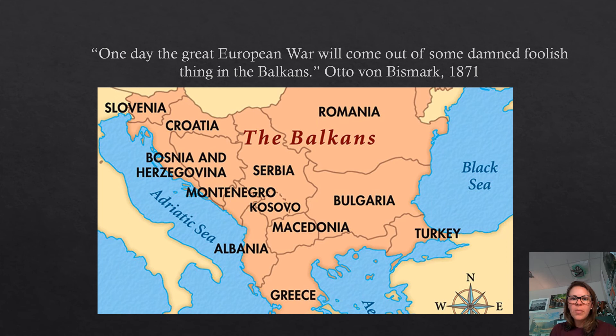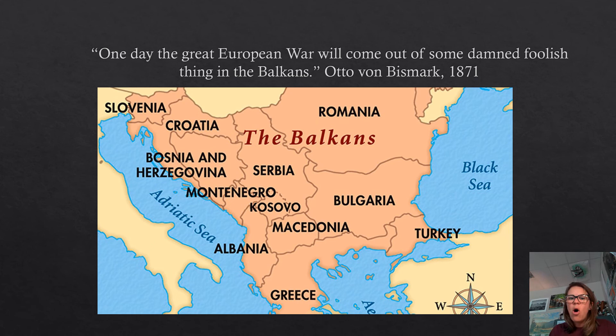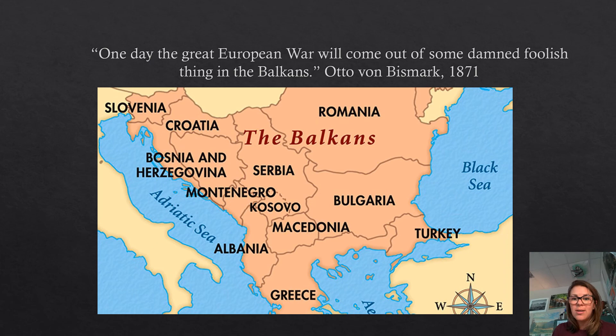Bismarck said, 'One day the Great European War will come out of some damn foolish thing in the Balkans.' As your reading will explain in detail, this land is complicated — it has hundreds of languages, religions, and cultures, and they all wanted independence, especially after the collapse of the Ottoman Empire. They'd all been part of a larger empire for so long that in this era of nation-building they wanted their own share. The problem is the Russians, Austrians, Turks, French, and British were bigger, with larger militaries, and ready to fight.